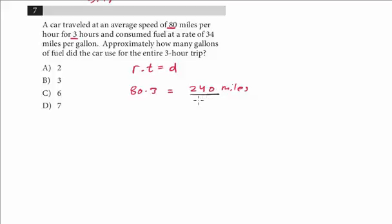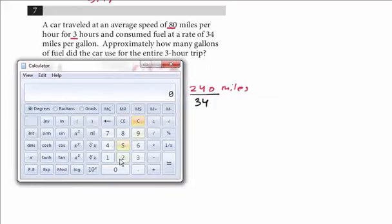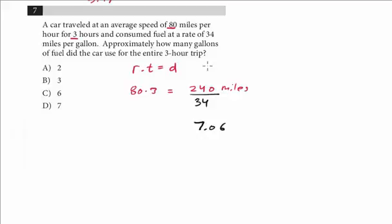So we just take the total distance traveled, the 240, and we divide by the fuel consumption. We can just use our calculator. So that's 240 divided by 34, and we get 7.06. And here it says approximately, so definitely the closest choice is D.